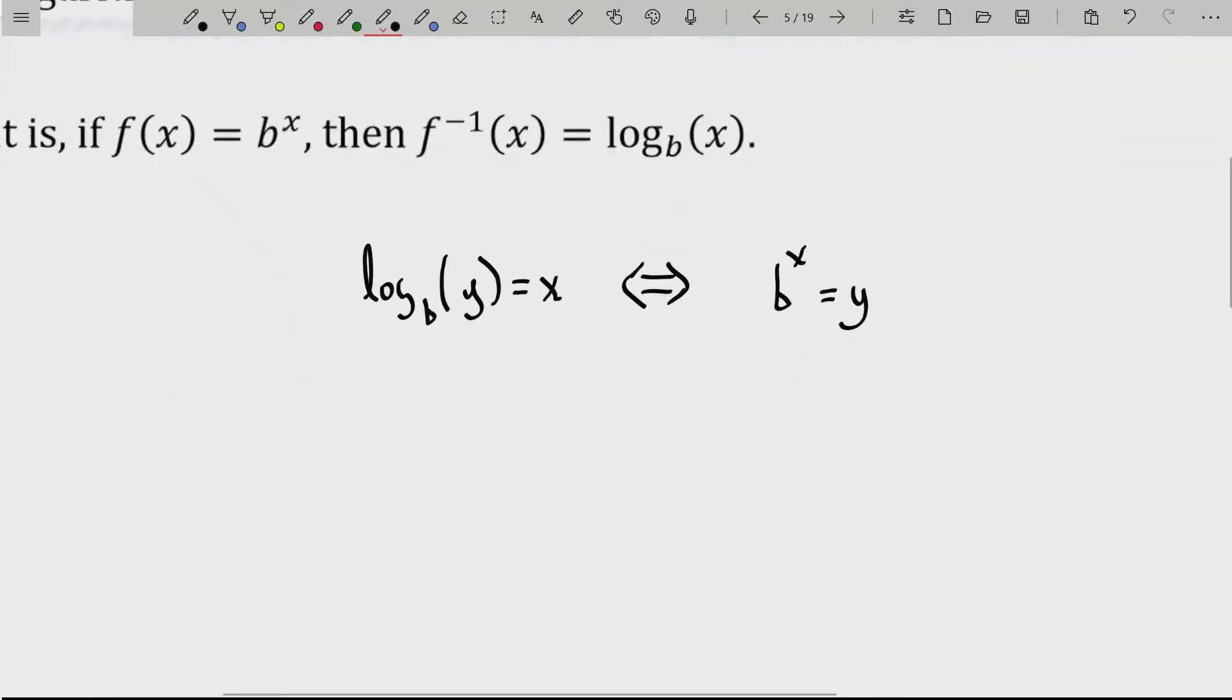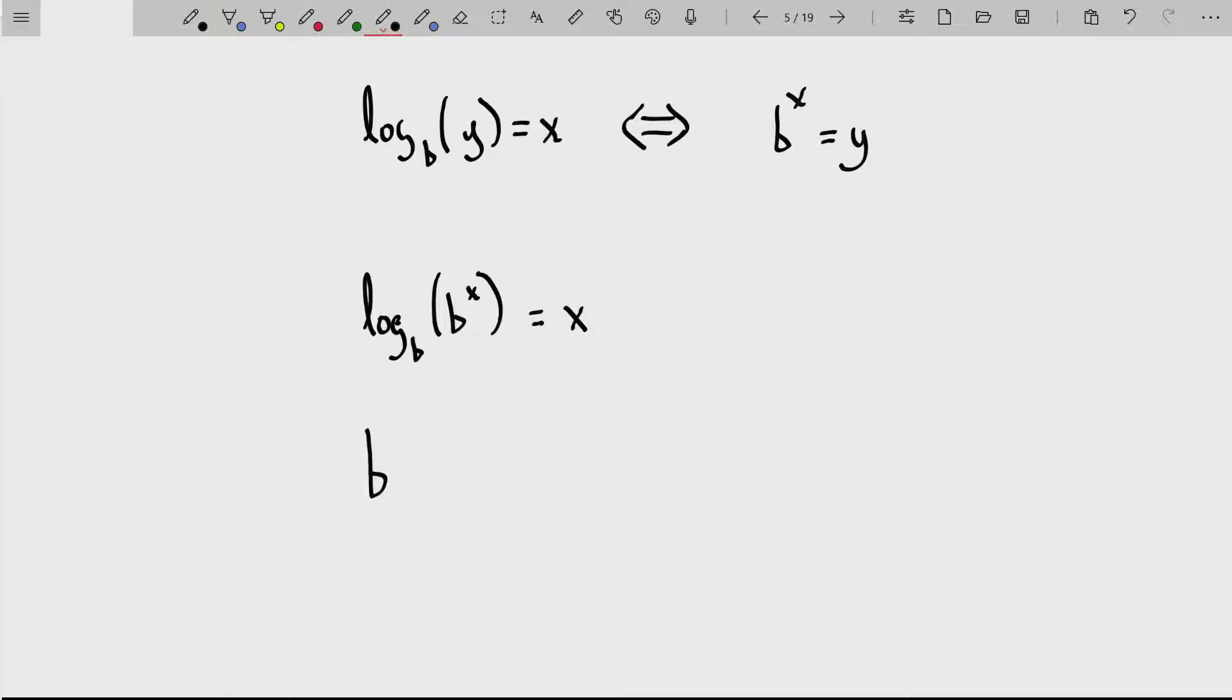Now you might say, I don't see that from this statement. Because log base b of b raised to the x power, the base of that logarithm and the base of the exponential function there are the same. And we know from properties of logarithms that this will just be x. So the log undoes the exponential function. Now let's see if it works the other way around. So if I take the exponential function base b and raise it to the log base b of x.